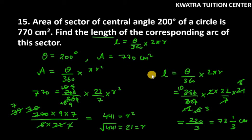This is easy. What you have to do is: if theta is given and area is given, you have to first find the radius, then use the arc length formula. This is how you proceed with these types of questions. Thank you for watching. Have a great day.